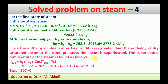To find the superheated temperature, we use the enthalpy equation for superheated steam: h_sup = hf + hfg + Cps × (T_sup − Ts). Substituting: 2833.2 = 762.6 + 2013.6 + 2.1 × (T_sup − 179.9). After simplification, T_sup = 207°C. This is the condition of the final state of the steam.